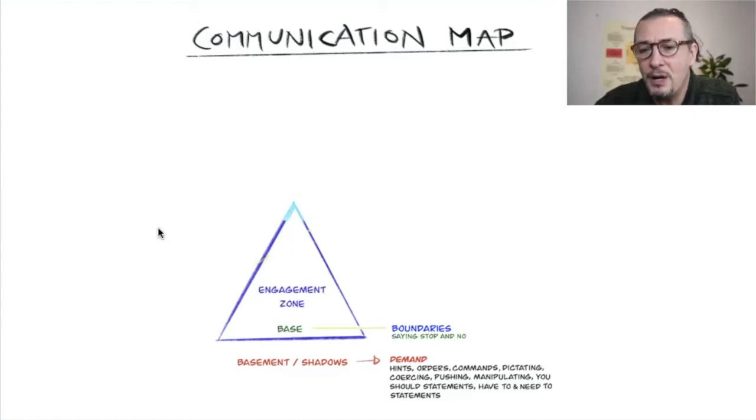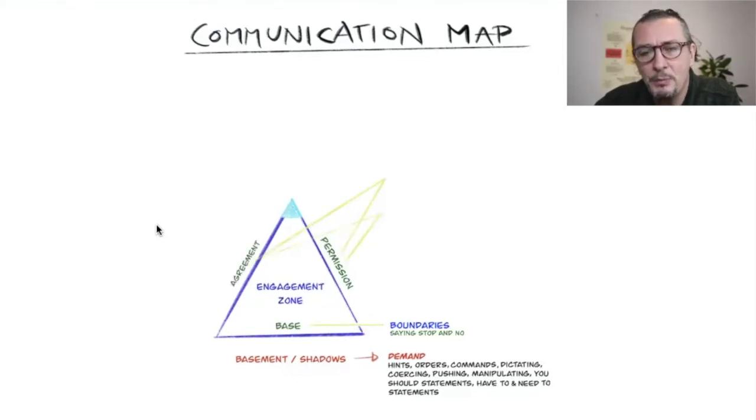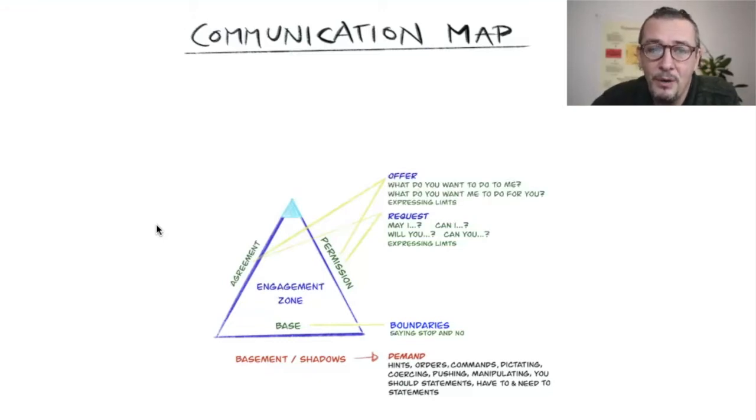Then you are within the engagement zones, within the three minute game—within the request or maybe an offer. When you make the dynamics workable, you know there's a permission and agreement dynamic in the engagement zones. Either you make a request: 'may I,' 'can I,' 'will you,' or 'can you.' Or if you're more altruistic without needing anything back, you make an offer.